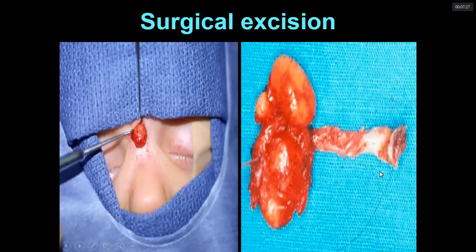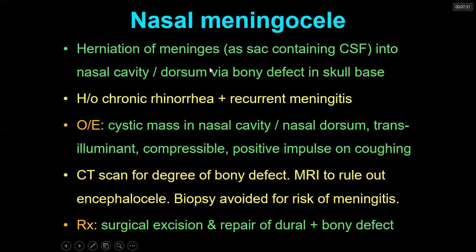Nasal meningocele is the herniation of meninges — a sac containing CSF into the nasal cavity or dorsum through a bony defect in the skull base. The patient may have a history of chronic rhinorrhea and recurrent meningitis. On examination there is a cystic mass, transillumination is present, it is compressible, and there is a positive impulse on coughing. CT scan is done for degree of bony defect and MRI to rule out encephalocele.